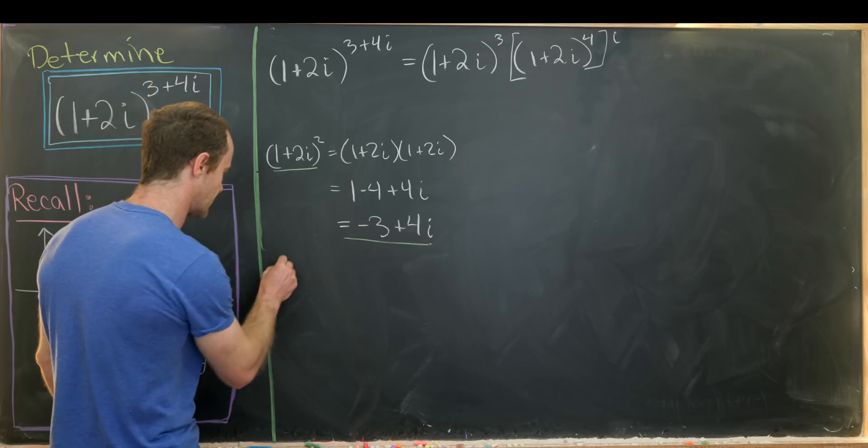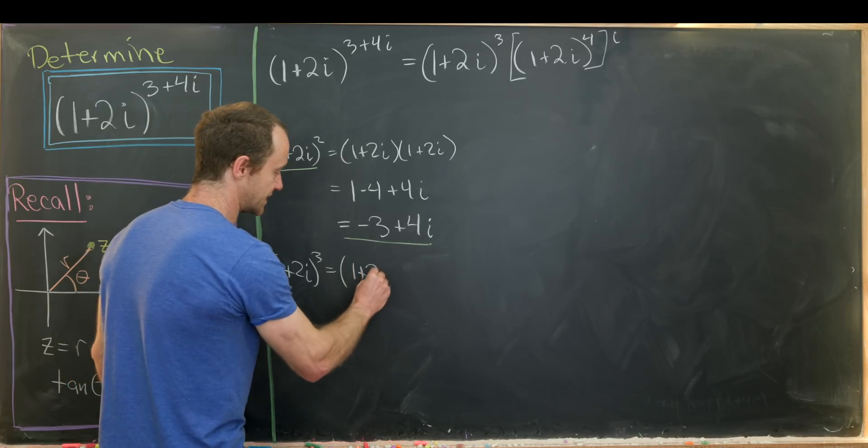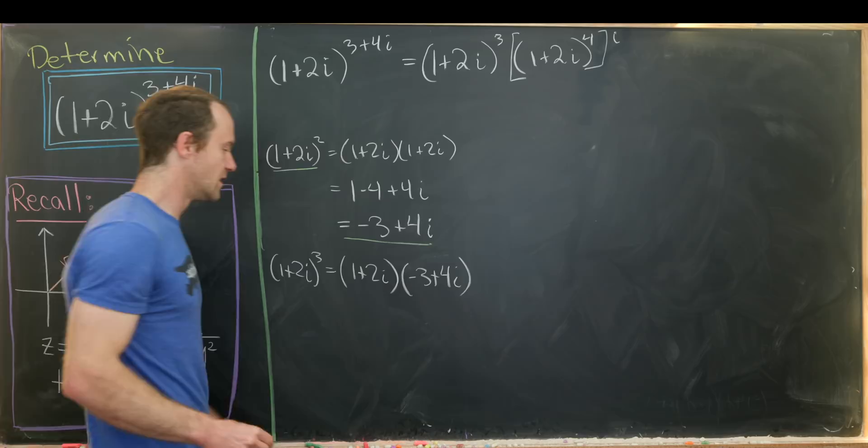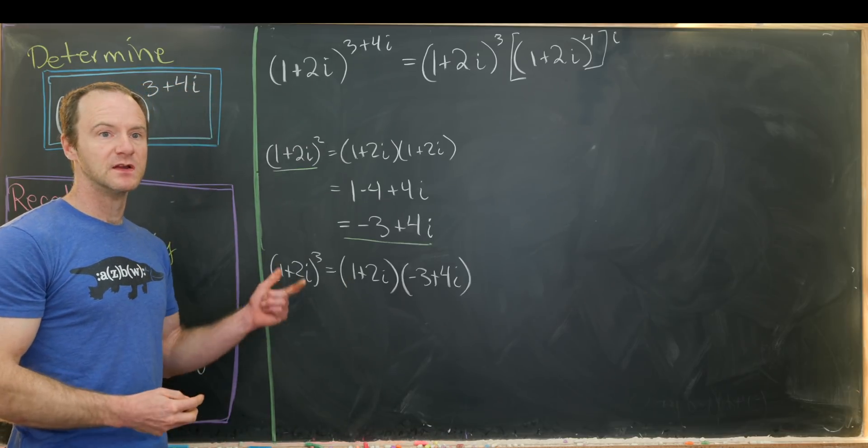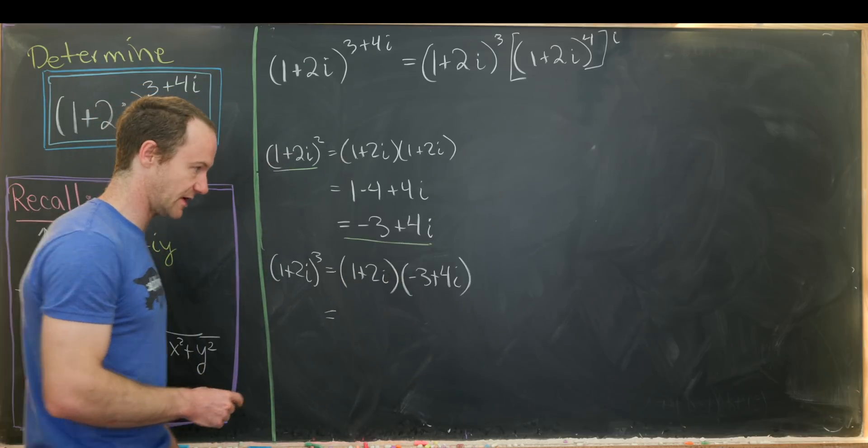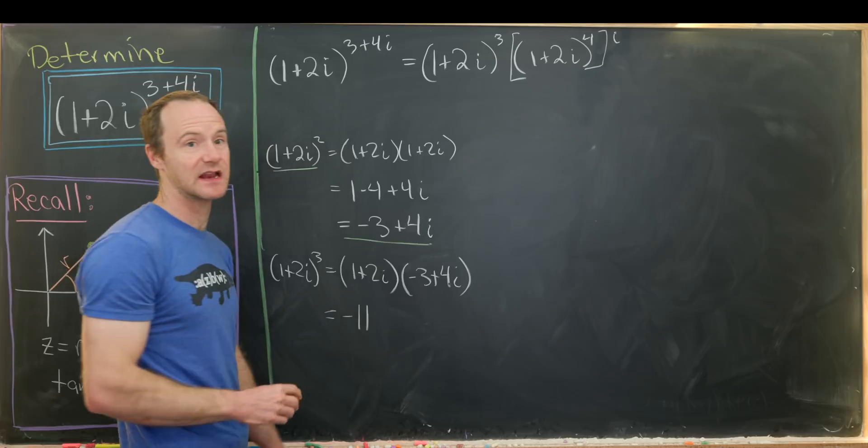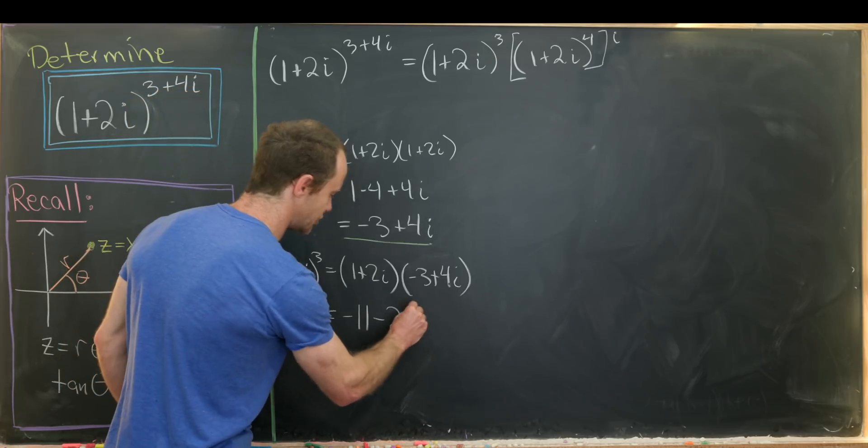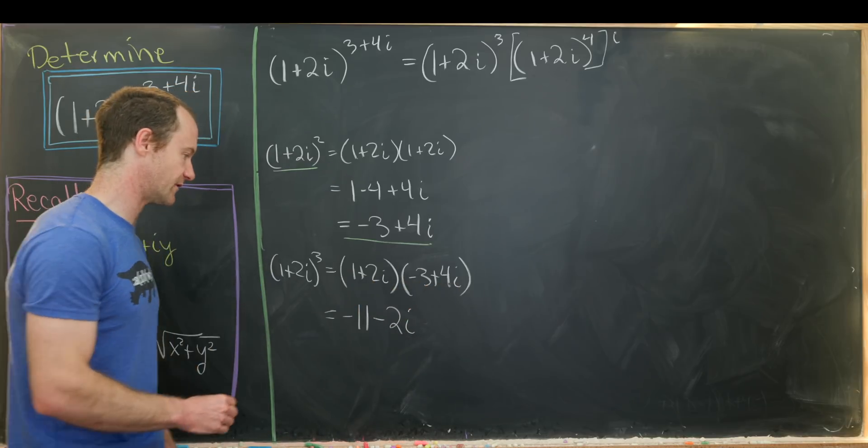And now we can calculate 1 plus 2i cubed. That ends up being 1 plus 2i times negative 3 plus 4i, because it's really just 1 plus 2i times 1 plus 2i squared. We can multiply that out. And we'll get 1 times negative 3 is negative 3. And then we have to subtract 8 from the i squared term. So that gives us negative 11. And for our imaginary part, you'll see we get minus 2i. That's because we get a minus 6i from this and a plus 4i from this.